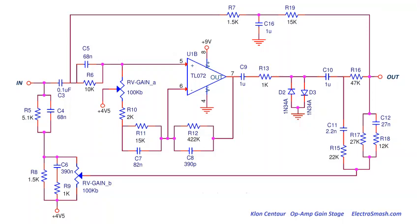As we view the main portion of the schematic, after the input buffer, we can see the three signal paths before they get summed together. After studying many simulations, I realized the clean path has virtually no impact when gain is above 9 o'clock. At minimum gain, bandwidth is flat and sterile — who needs that?